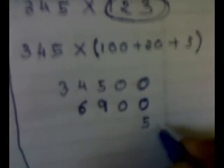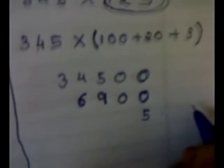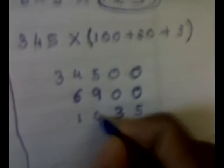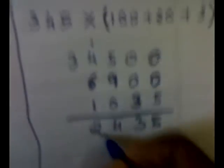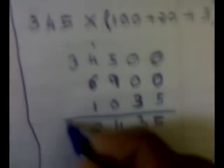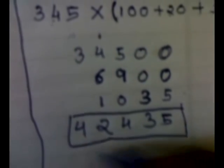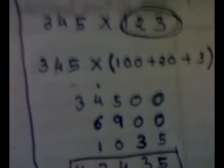Now multiply 345 by 3: 5 threes are 15, carry 1; 4 threes are 12 plus carry 1 is 13, carry 1; 3 threes are 9 plus 1 is 10. Then we add all the results: 34,500 plus 6,900 plus 1,035. We get our final answer 42,435 — the same answer. This method is very easy when one of the two numbers is very near to 100.